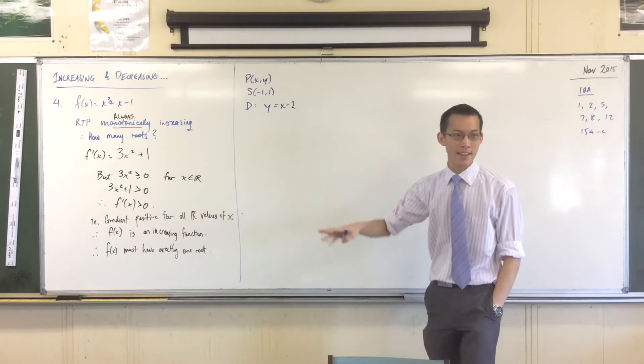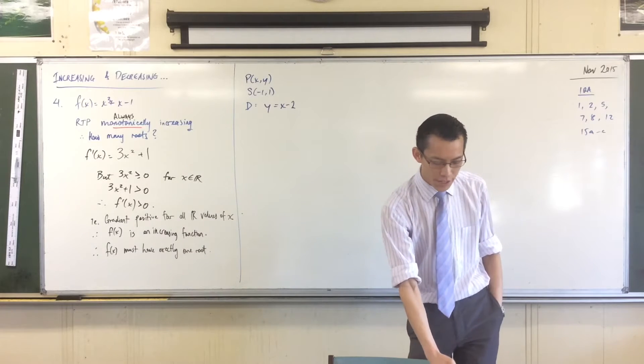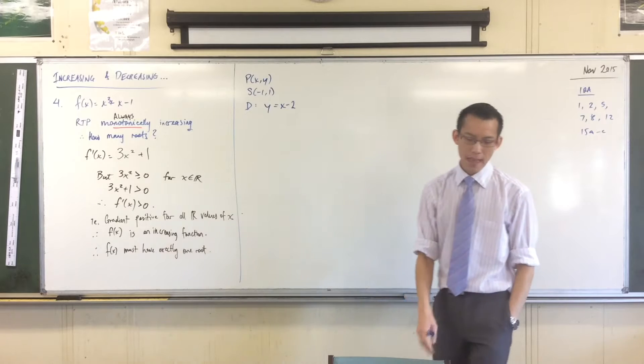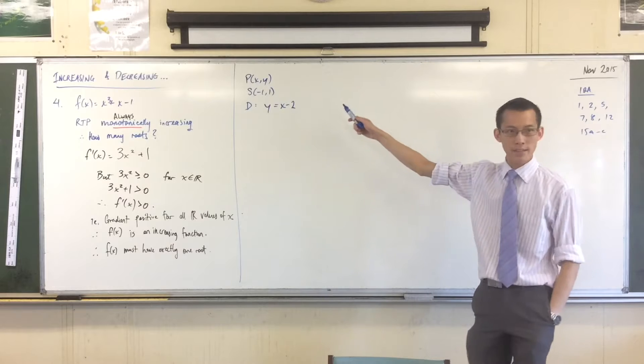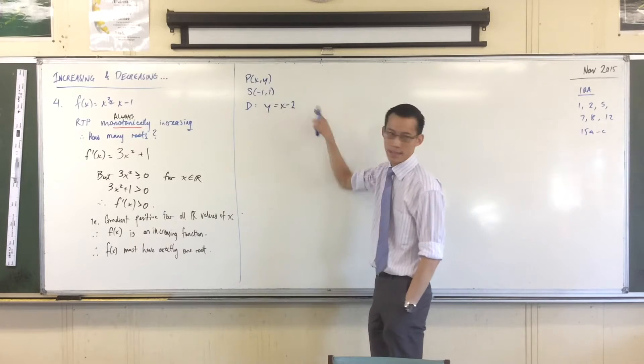These are all the guts of the question. Very simple. It says use the definition of a parabola and the perpendicular distance formula to find the locus of points that is equidistant from here and here.